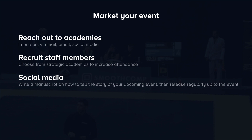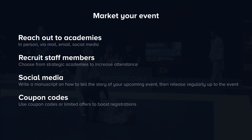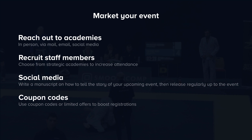Coupon codes are something we offer in SmootComp. You can set a code that gives athletes a better price when they sign up. Use coupon codes or limited offers to boost your registrations. We've seen organizers use this very effectively — they create a coupon code available only for three hours or only today, offering 50% off registrations. If you do that early in the registration process, you'll see more people sign up and that creates hype about your event.